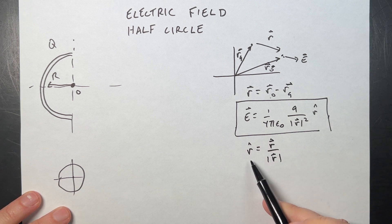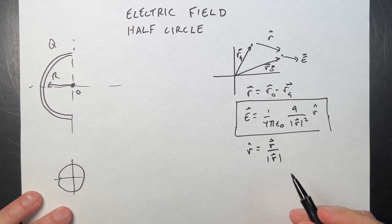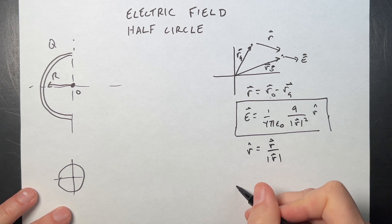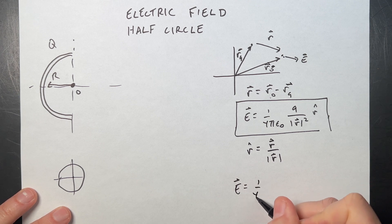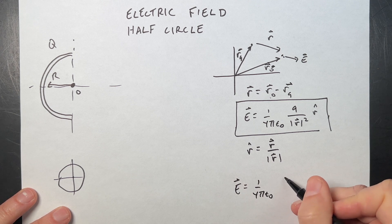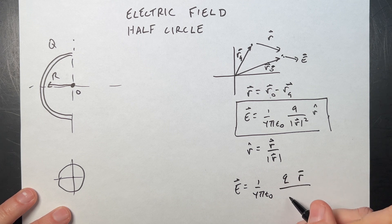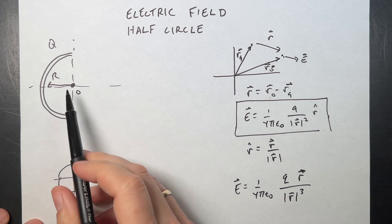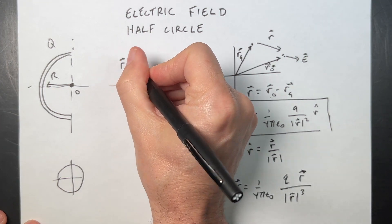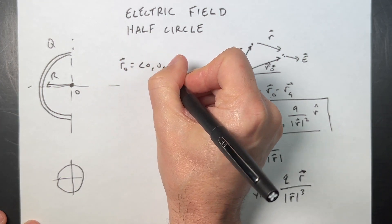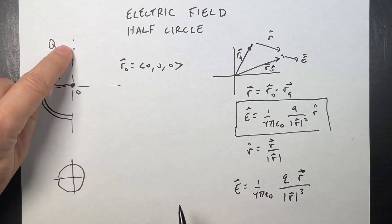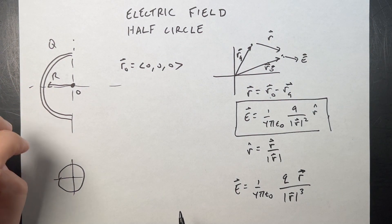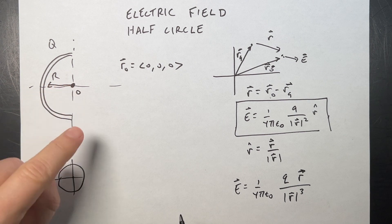Substituting R-hat gives a slightly cleaner version: E = (1 / 4π ε₀) × Q × R / |R|³. That's the form we'll use. R_O is the vector (0, 0, 0). Now I just need an expression for all the charges, find the field due to each, and integrate.